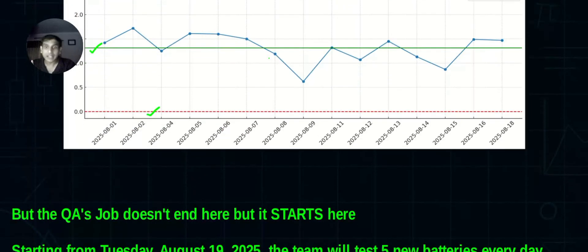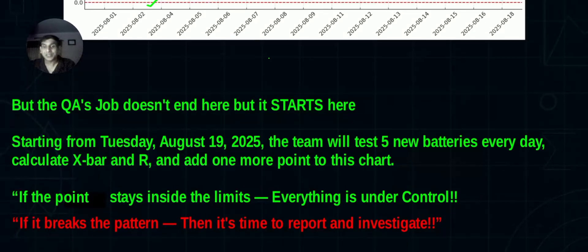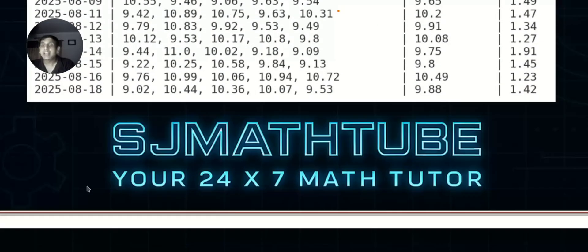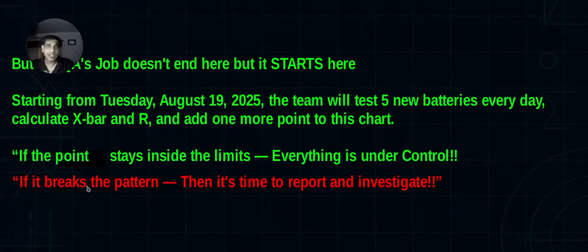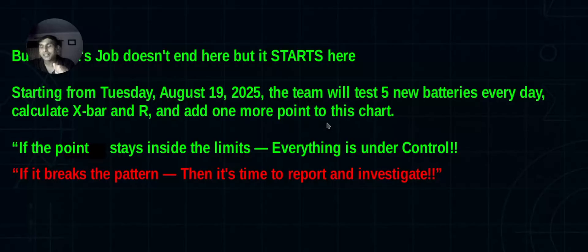Now let's work out one problem. The QA's job is not done; it starts here. Starting from Tuesday - they stopped on Monday, August 18th - starting from Tuesday the 19th, every day they will take five batteries. They started with five every day, they cannot reduce it. It should be maintained five, five, five every day. They will calculate X-bar and R and keep adding the points. This will be done by software. If the point stays inside the limit, everything is under control. If something is not in pattern, if the point goes above or below, it's time to give a warning. Production will be stopped, investigation will be done, and they'll take care so things stay inside control.